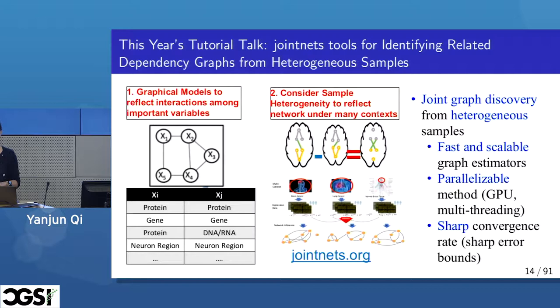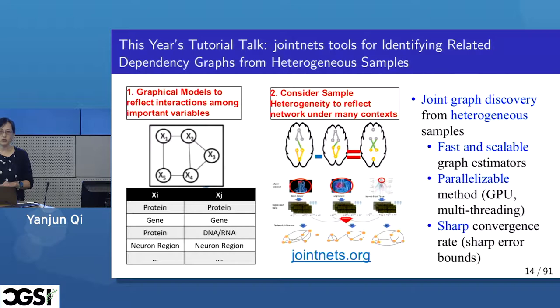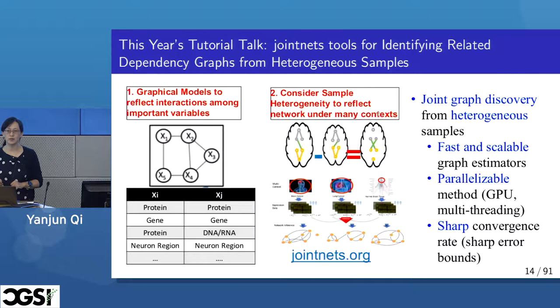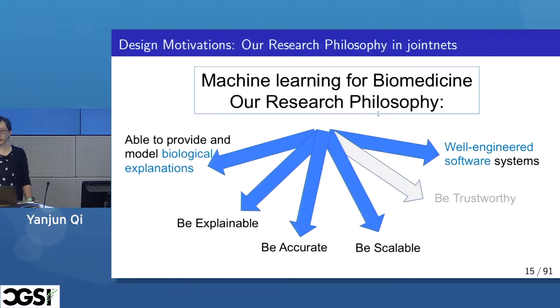Our design of novel approaches is motivated by our interest in biology. The time I started this project, ENCODE and Roadmap had released data about multi-cell data, giving us a chance to think about extending sparse graphical models. Our goal, echoing our research philosophy, is to design joint graph discovery from heterogeneous samples — accurate and scalable — with a lot of parallelization considerations, and achieving sharp convergence rates.